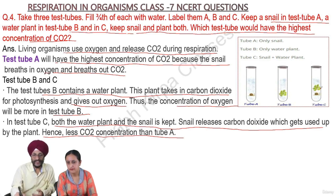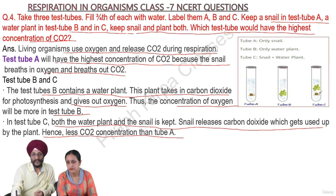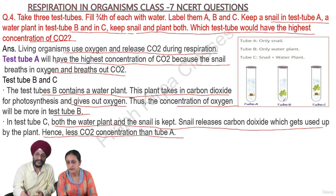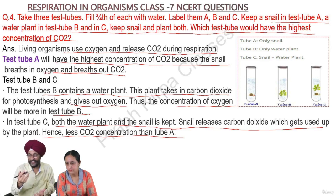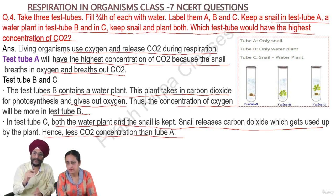Comparing all three: the concentration of carbon dioxide in tube C will be less than in tube A. In test tube A, because the snail releases carbon dioxide, test tube A has the highest concentration of carbon dioxide overall.